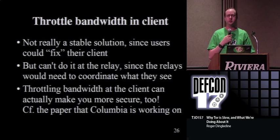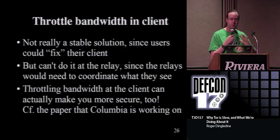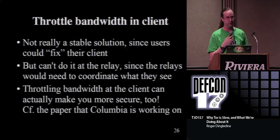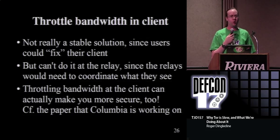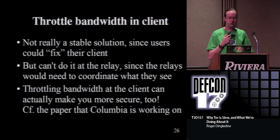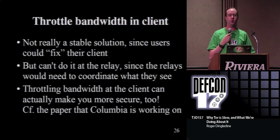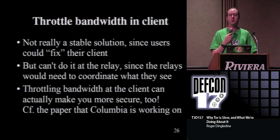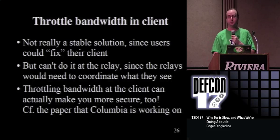One option is maybe we should throttle bandwidth at the client - by default rate limit you to 20 kilobytes a second, with bursting higher but the average enforced at 20 kilobytes a second. On one hand, that's a horrible idea because clients will say it's free software and I'm going to fix it and not be rate limited. Most Windows users don't know how to do that, so it might be easier than we think. I worry somebody will fork Tor and say 'I'm going to give you the fast Tor because the slow Tor is slow.' On the other hand, maybe it's a good idea to rate limit for security - there's an attack where the faster you use Tor, the faster they can hunt you down. If you're pushing 80 kilobytes a second, you're much more noticeable. But if you're always pushing at most 20 kilobytes a second, you blend in really well.